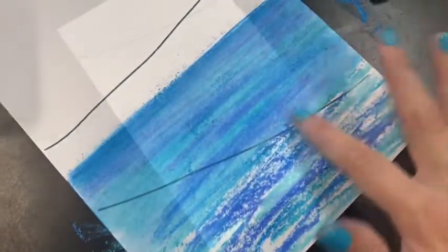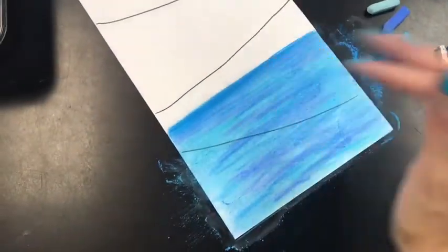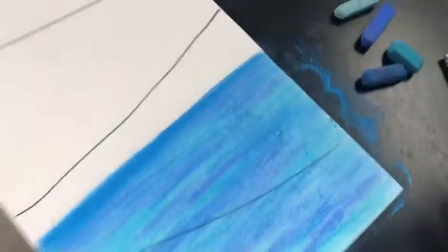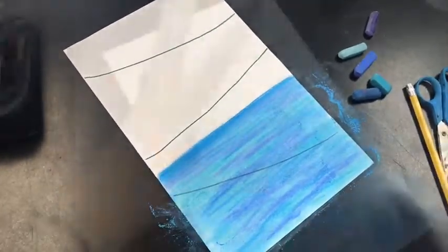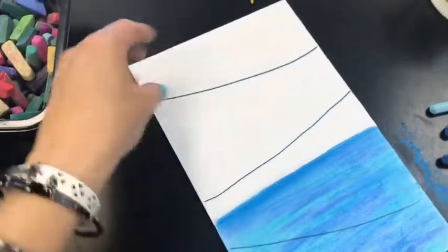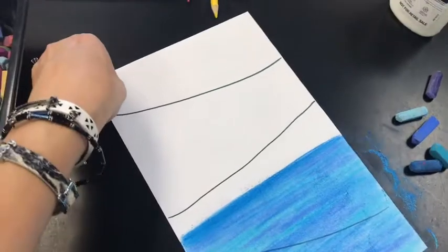This part can get a little messy. We're gonna make sure that any of the pastel that comes off of our paper we do not blow that. We do not brush that off the table. We use a clean hand to move our paper over and then we get a damp paper towel to wipe it up. This is the safest way to clean up pastel. We don't want to be breathing it in.